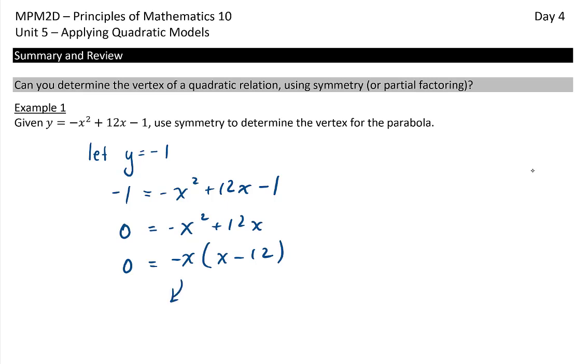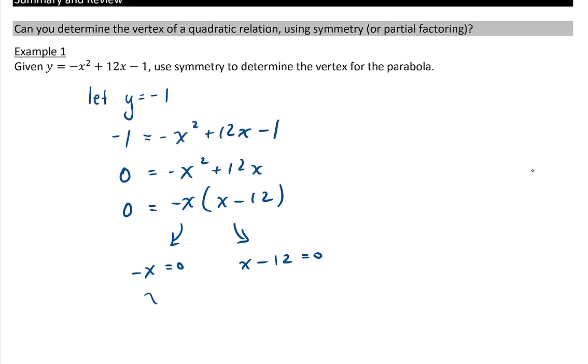We look for the roots of the equation. So negative x equals 0 and x minus 12 equals 0. So we get our first root is at 0 and our second one is at 12.